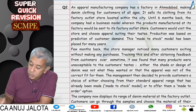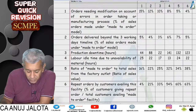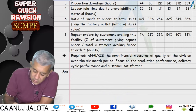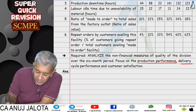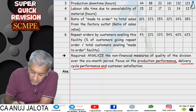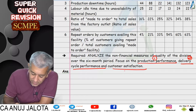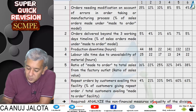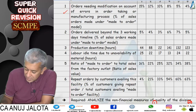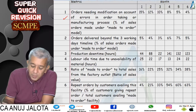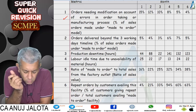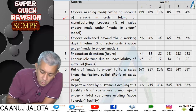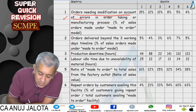Six KPIs are given for the last six months, and we must analyze them under three heads: first, production performance; second, delivery cycle performance (how fast the product is delivered); and third, customer satisfaction. The first step is to classify each KPI under the appropriate head, then analyze the data under each criterion.